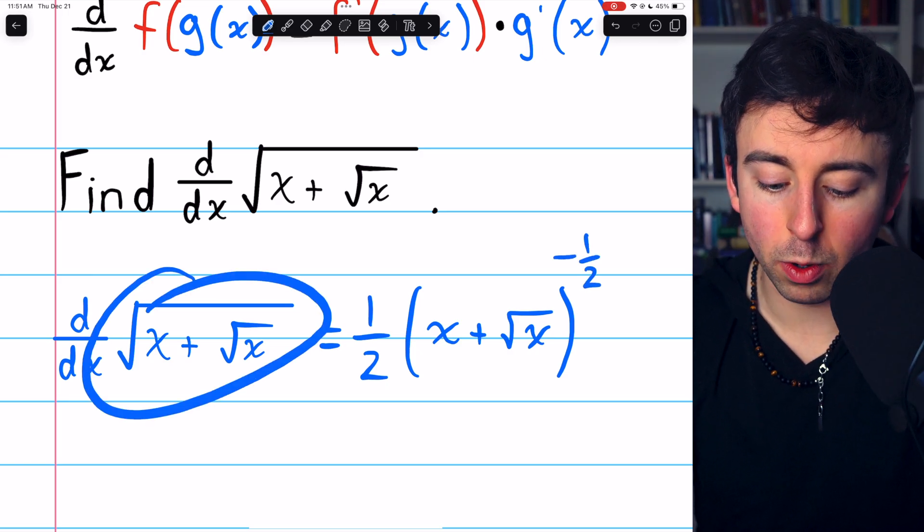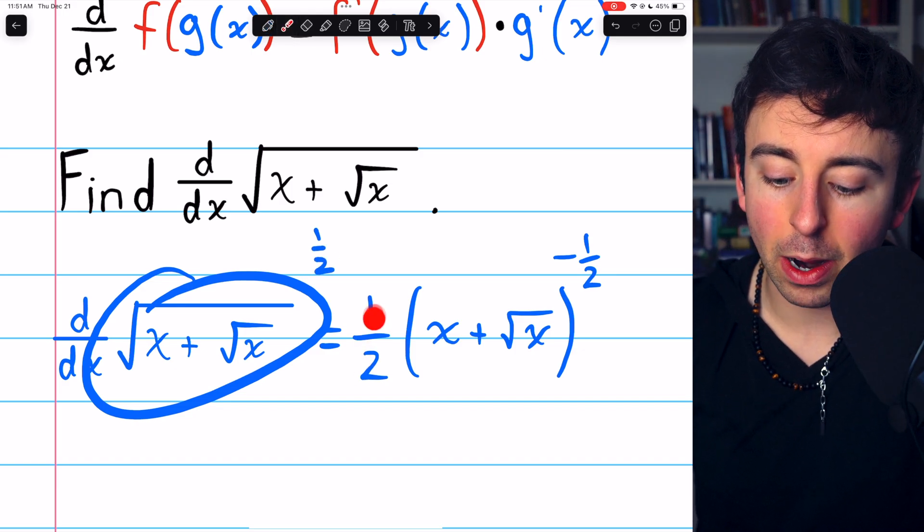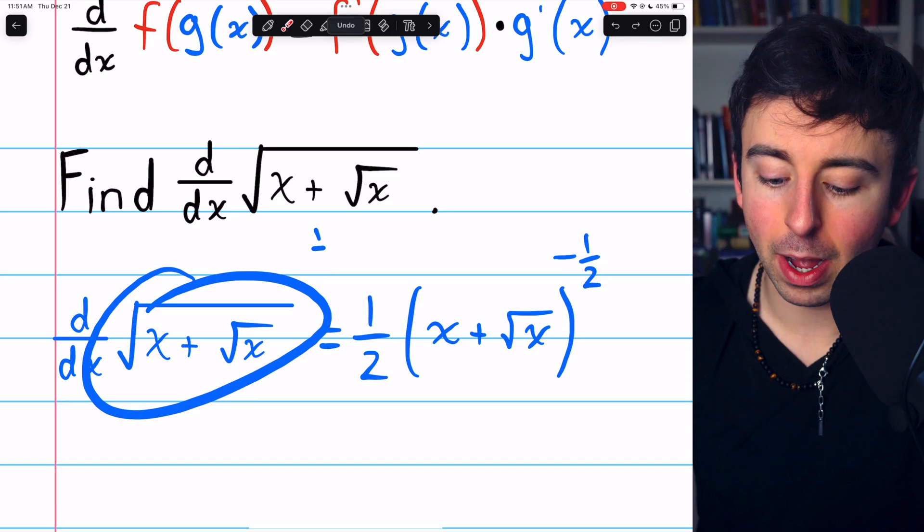This is because a square root is the same as a power of a half, so we just use the power rule. Bring that power down as a factor and then reduce the power by one.